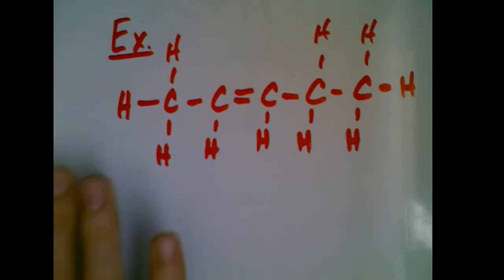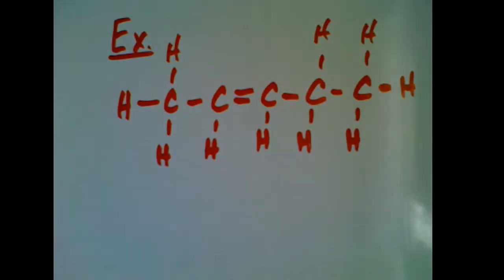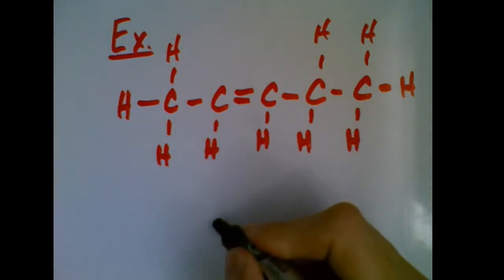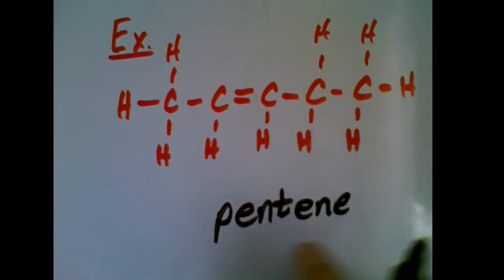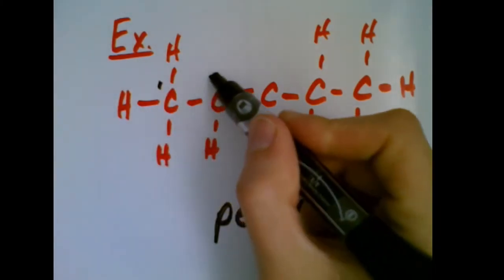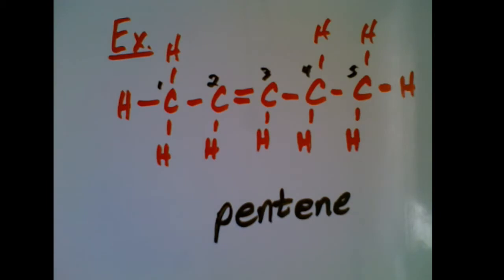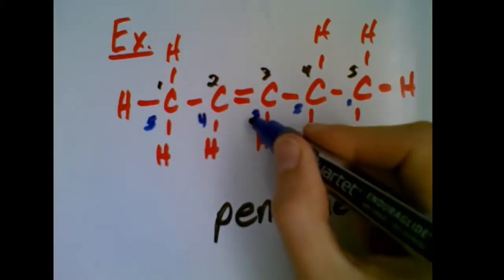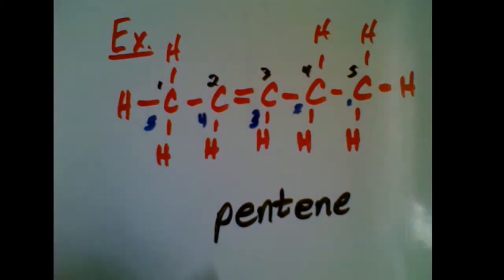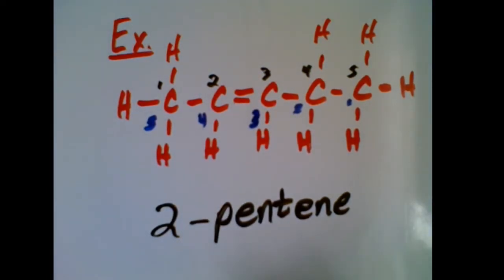In the next example, we have a chain of carbons with a double bond. The longest chain containing the double bond is five carbons, so we have some kind of pentene. Numbering the chain, going from the end closest to the double bond gives us carbon number two at the double bond. So we call this 2-pentene. It's actually pretty similar to naming alkanes — the main difference is the numbering.